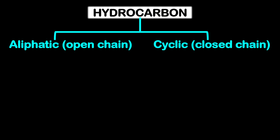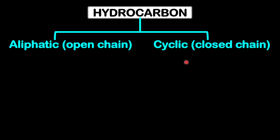Hydrocarbons can be placed into two large groups: those that are open chain and those that are closed chain. The ones that are open chained are called aliphatic, and the ones that fall under the closed chain are called cyclic.